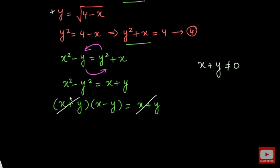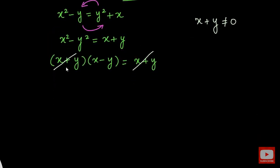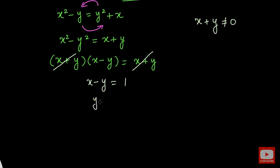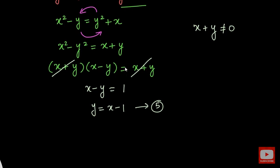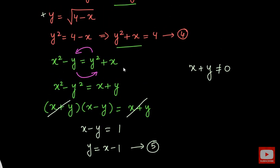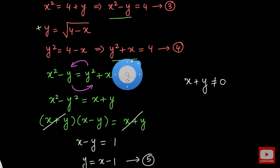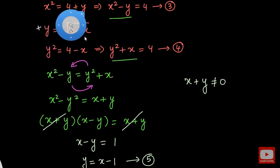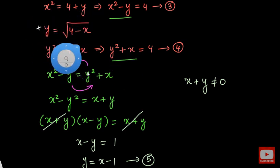After cancelling, we get x minus y equals 1. From here we can say that y equals x minus 1. Let this be equation number 5. Now I am going to substitute equation number 5 into one of the earlier equations — either equation number 3 or 4. Maybe we can take equation number 3, which should work better.